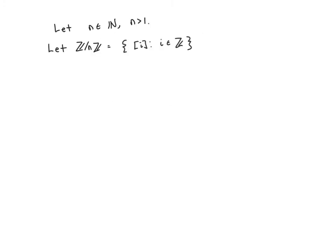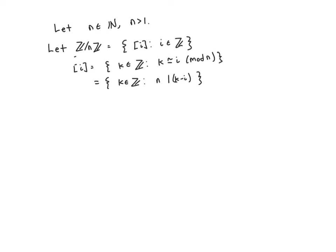Let n be a positive integer greater than 1. We're going to let Z mod nZ be the set of equivalence classes — that is, equivalence classes of the form [i] where i is an integer. We recall that the equivalence class of i is the set of all integers k such that k is congruent to i mod n, which means n divides k minus i.